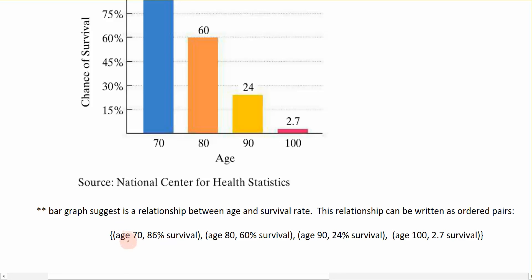Now in the ordered pair, we have our age value as well as the survival rate. And each one of these ordered pairs is unique. The age of 70 is unique to an 86% survival rate. The age of 80 has its unique survival rate of 60%. So each of these relations are correspondence between these two concepts.